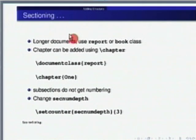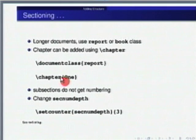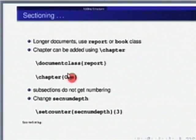For longer documents we use report or book — that is where you will first have chapters, and inside the chapter you will have sections. You will have chapter 1, chapter 2, then sections numbered as 1.1, 1.2, 1.3. This is exactly the way we want for a book or a report. The first chapter we typically call introduction — chapter with introduction in curly brackets.